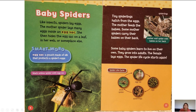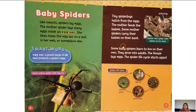This is a photograph of a black widow spider with an egg sack. And on the other page we have spiderlings — we can see them here, very tiny. This is a mother wolf spider with babies on her back. Tiny spiderlings hatch from the eggs, the mother feeds the babies, and some mother spiders carry their babies on their back. Some baby spiders learn to live on their own and grow into adults, then the female lays eggs and the spider life cycle starts again.